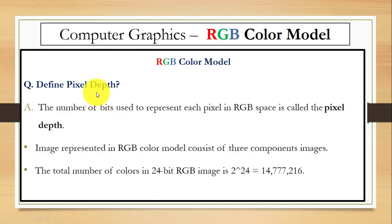Next is, what is pixel depth? That is, the number of bits used to represent each pixel in RGB space is known as pixel depth. So, image represented in RGB color model consists of three components: red, green, and blue. And the total number of colors in 24-bit RGB image is 16,777,216.